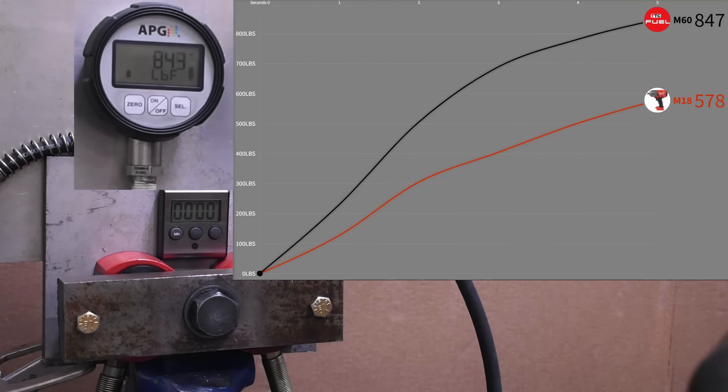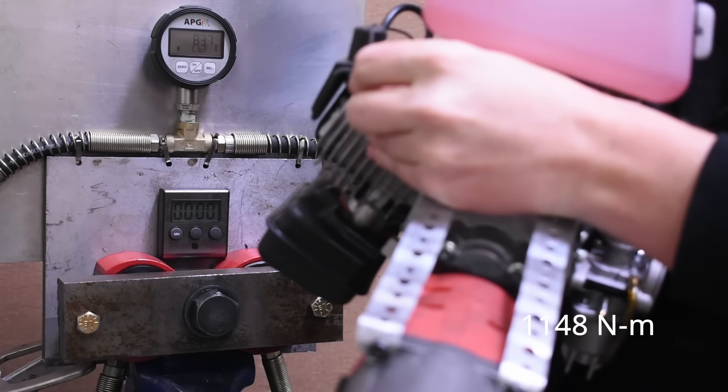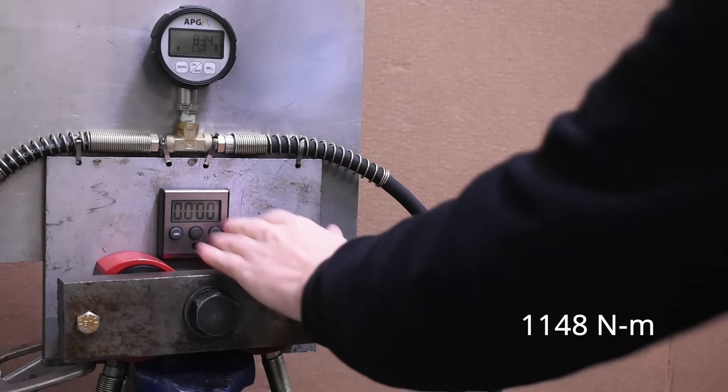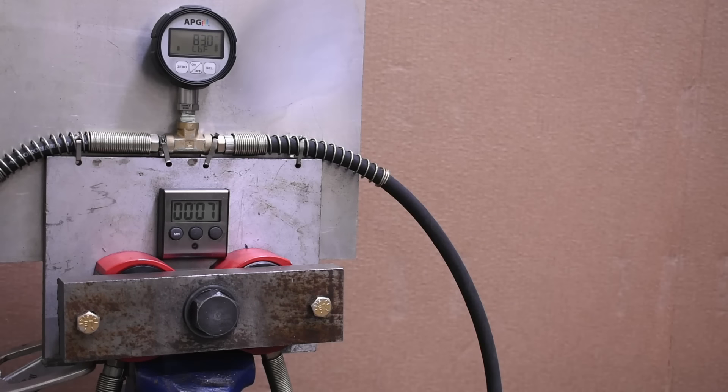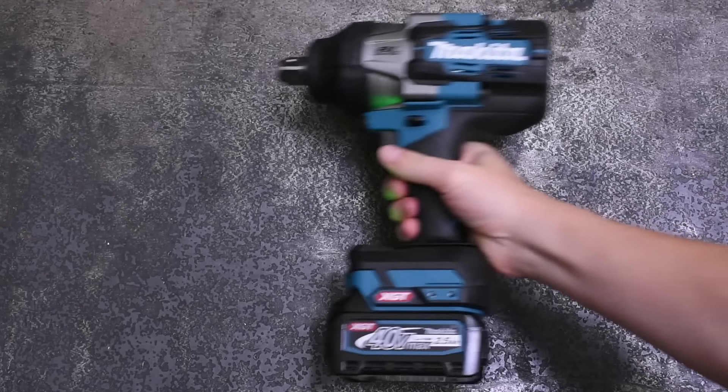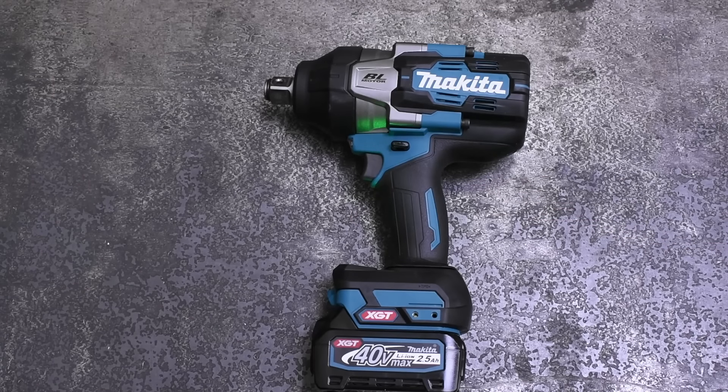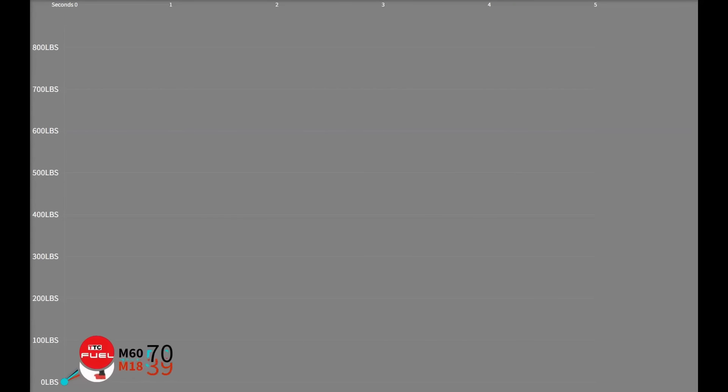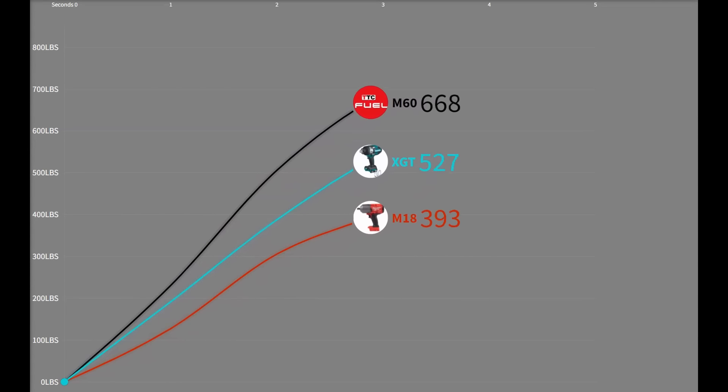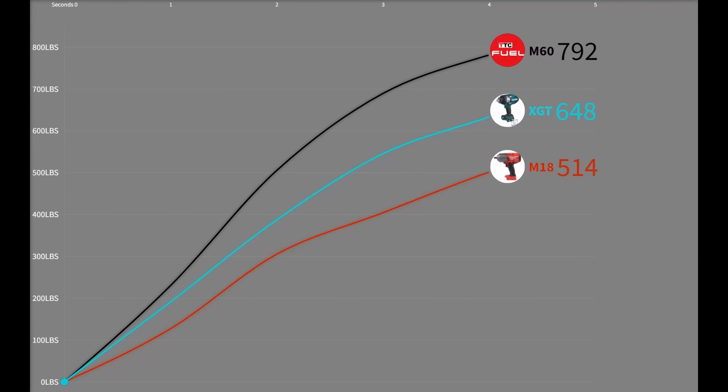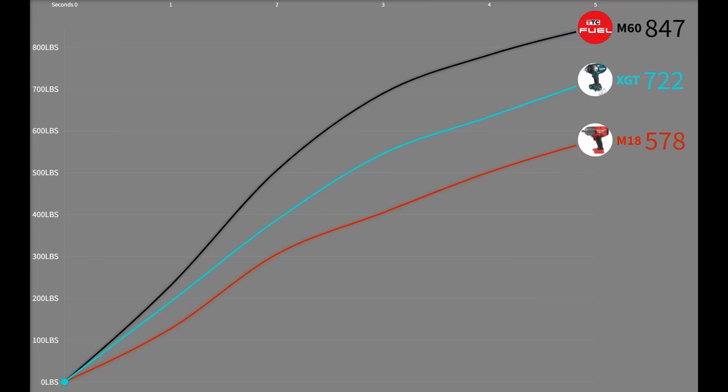847. I'll be honest, all of us thought this thing might kick the bucket on the first run and we had nothing to show, but 847, needless to say that's a record in half inch we've tested. But check it out compared to the newest XGT 40 volt three quarter inch impact wrench from Makita showing five seconds worth of reverse from that one. This is one of if not the most impressive cordless impacts we've tested, and the Makita, at least so far in this test, it's above that as well.